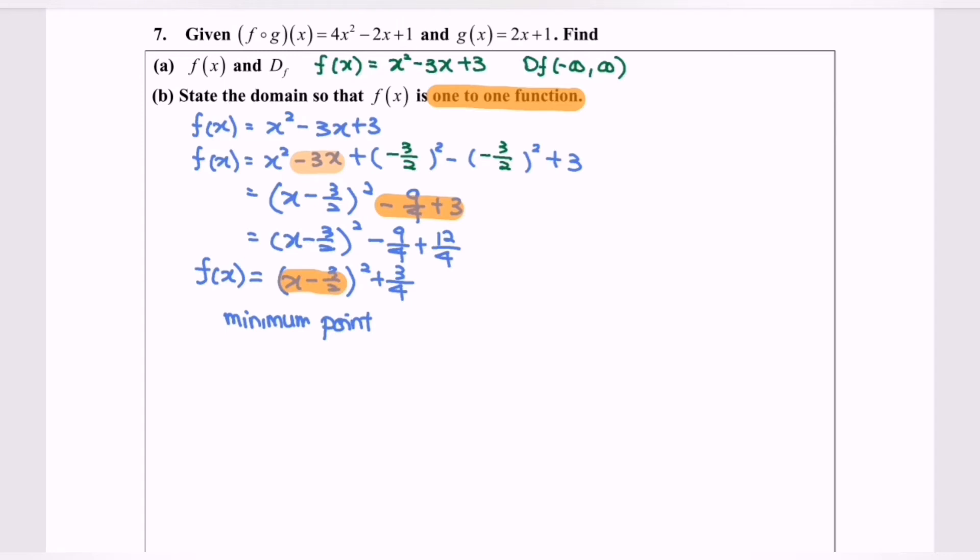So x equals 3 over 2, this will be our minimum value. So 3 over 4 will be our value of y. So that is our minimum point.